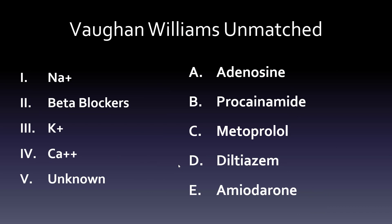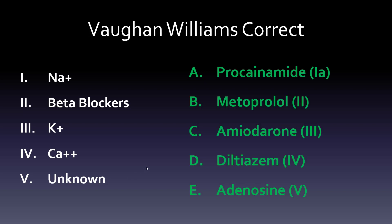Let's do a little quiz to make sure you've got this down. On the left I have sodium, beta blockers, potassium, calcium channel blockers, and the unknowns. On the right are adenosine, procainamide, metoprolol, diltiazem, and amiodarone — not in the right order. Using our mnemonics: sodium class 1 gets procainamide from the double quarter pounder. Beta blockers end in -olol, so metoprolol is group 2. Potassium class 3 gives us amiodarone from the SAD poets. Four very dill pickles gives us diltiazem for class 4. And the MAD group places adenosine in class 5.